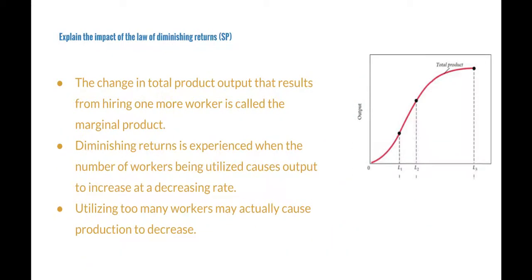The law of diminishing returns: the change in total product output that results from hiring one more worker is called the marginal product. Diminishing returns is experienced when the number of workers being utilized causes output to increase at a decreasing rate. As shown in the graph, as the number of workers increases, the total product does not increase at a steady rate — it increases at a smaller rate, meaning that utilizing too many workers may actually cause production to decrease.